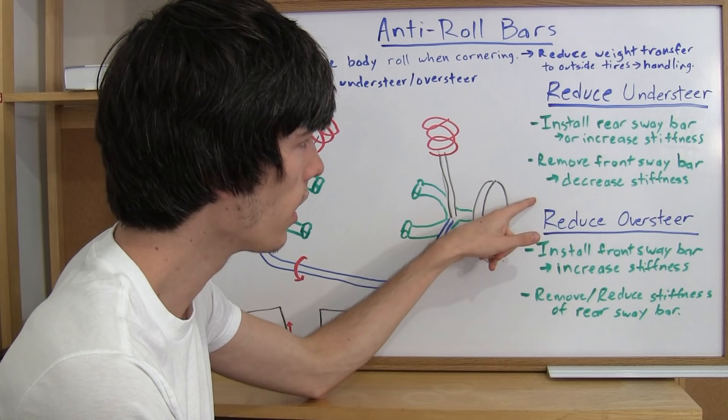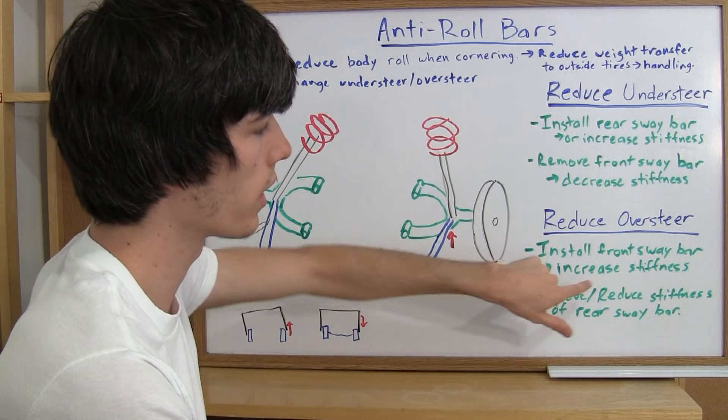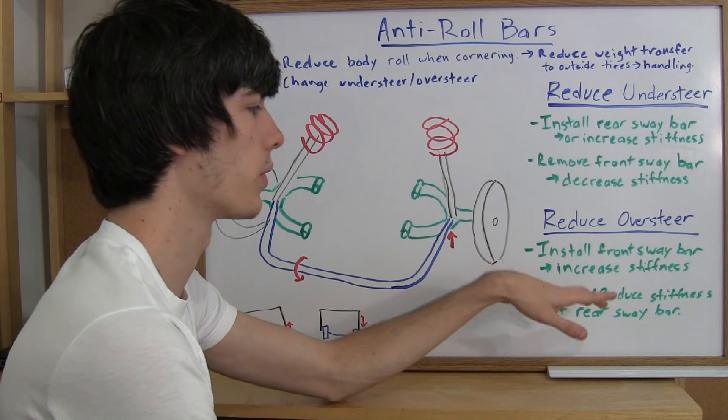Now if you're trying to reduce oversteer, you're going to do the opposite. You're going to install a front sway bar or increase the stiffness of the front sway bar, or remove the rear sway bar or reduce the stiffness of the sway bar.